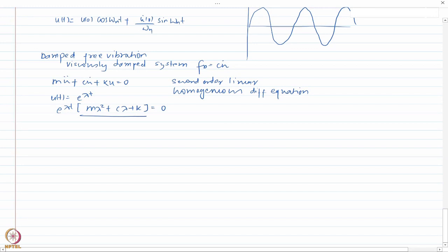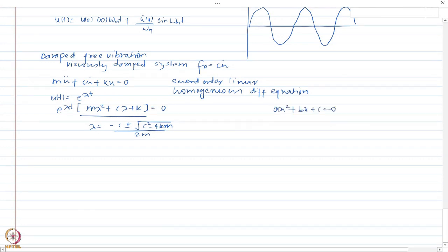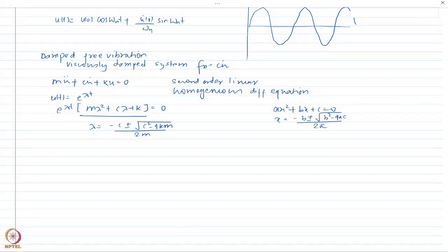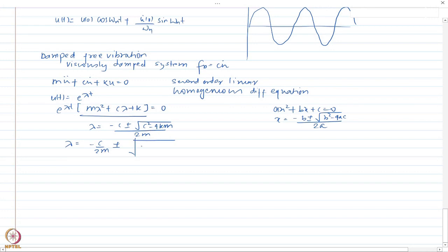From the quadratic formula, the solution for λ is: λ = [−c ± √(c² − 4km)] / 2m. This can be rewritten as λ = −c/(2m) ± √[(c/2m)² − k/m]. The term under the square root is key — depending on whether it is positive, negative, or zero, the nature of the resulting motion will differ.